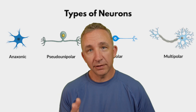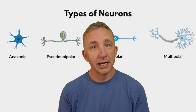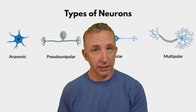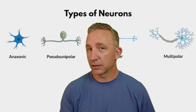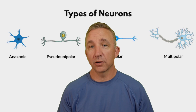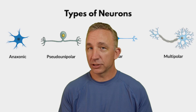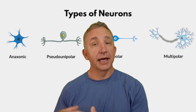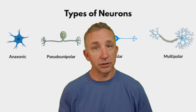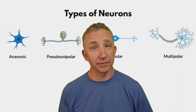When we covered the nervous system to start, we said there are two types of cells: the nerve cells, which are neurons, and then the neuroglia or glial cells, which are supporting cells. There are four types of neurons that we see, and the majority of them are multipolar neurons — over 90% of them are multipolar. In a future video, we'll discuss the six types of neuroglia or glial cells: four in the central nervous system and two in the peripheral nervous system.